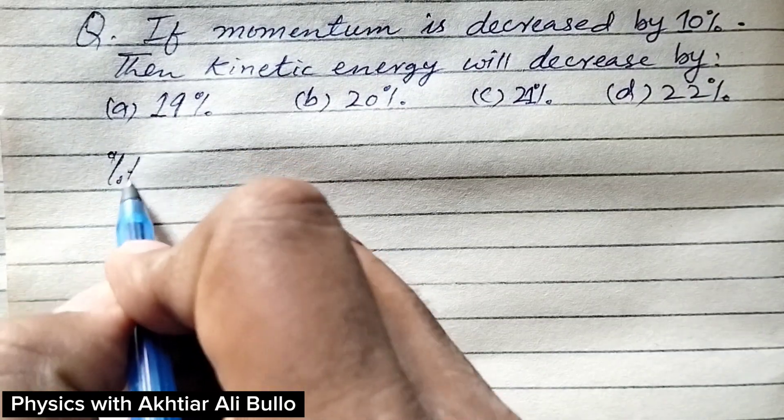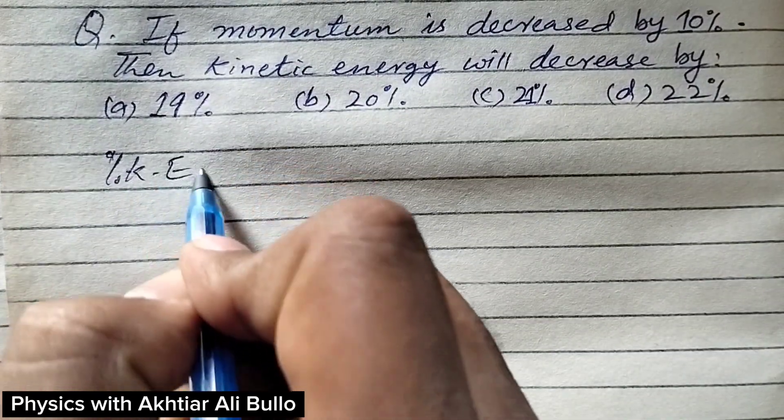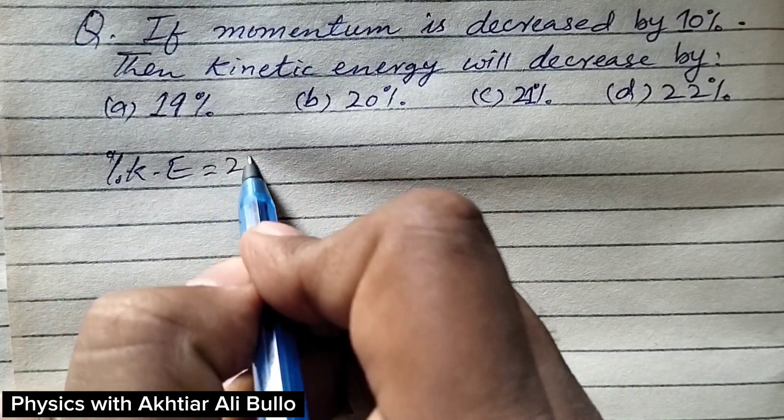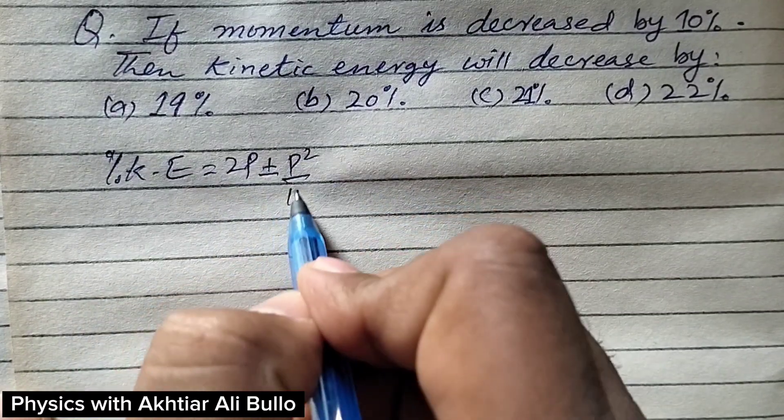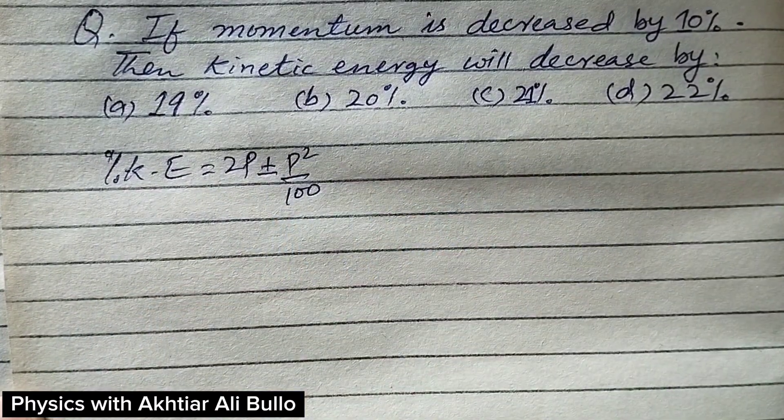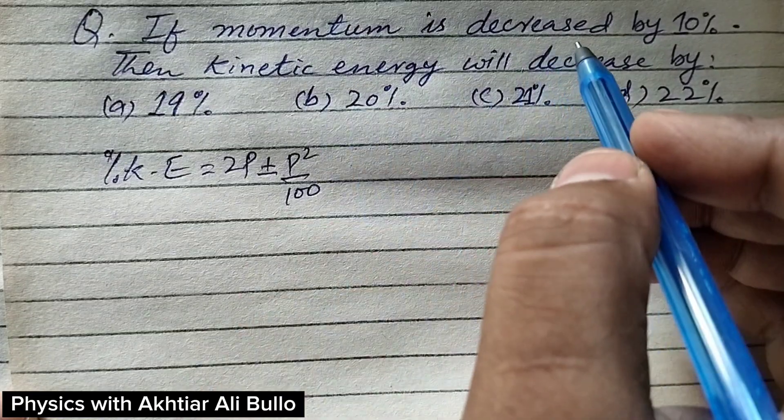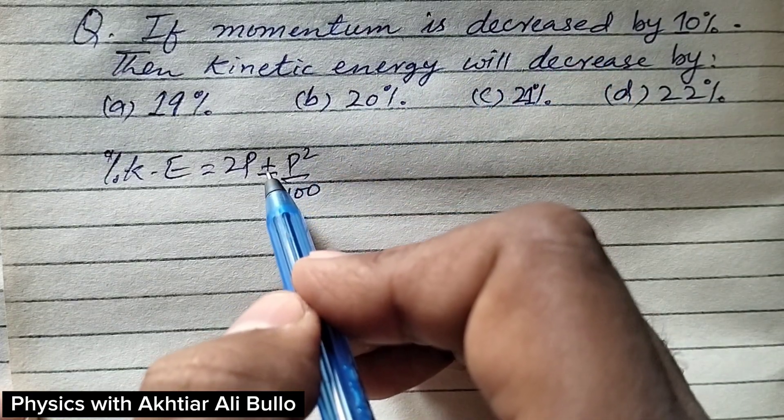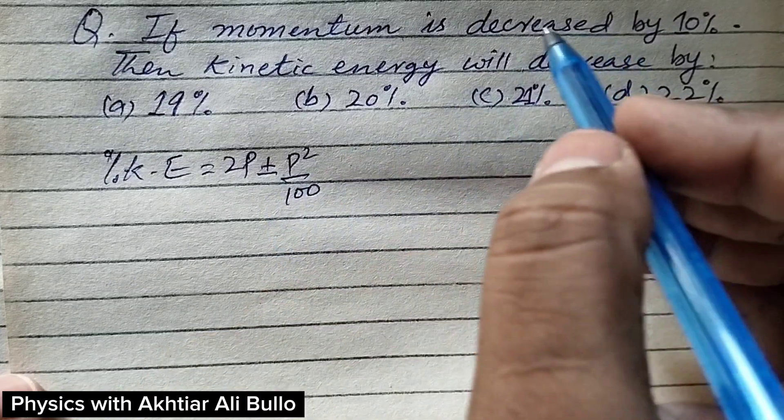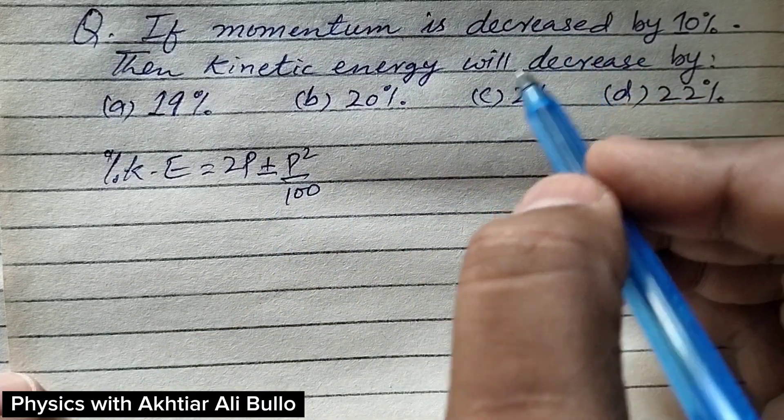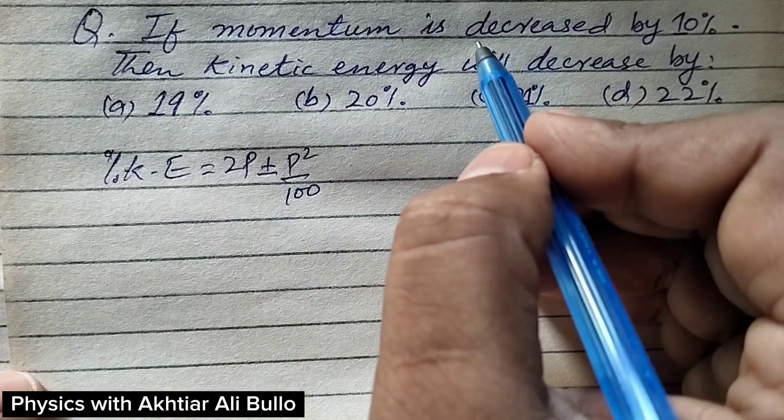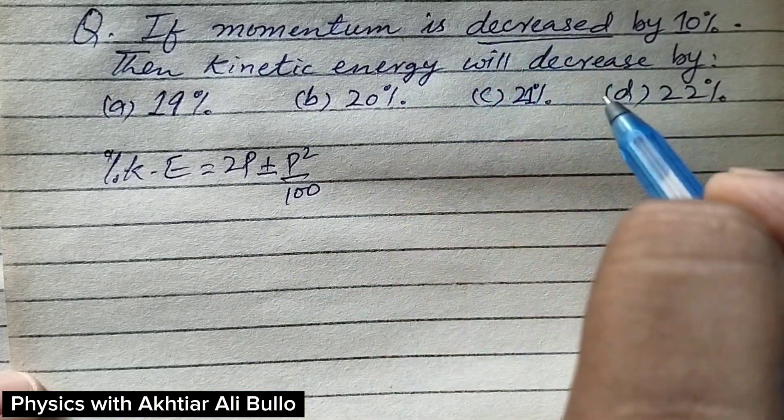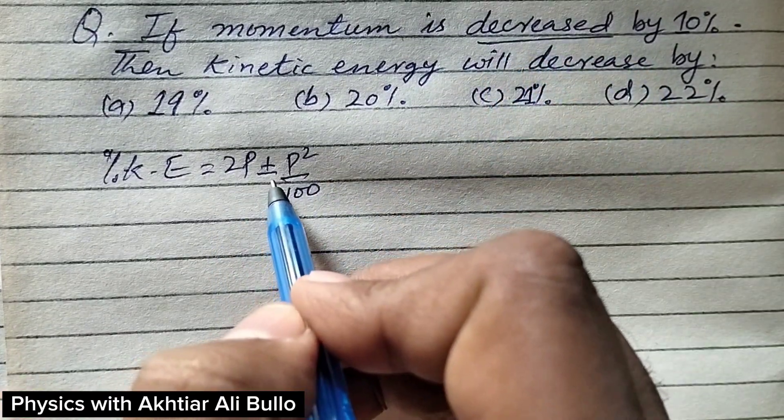The percentage change in kinetic energy is calculated by using the formula 2p plus minus p squared upon 100. When there is an increase in momentum, we take plus, and when there is a decrease in momentum, we take minus. So here there is a decrease in momentum, so we will take the negative sign.